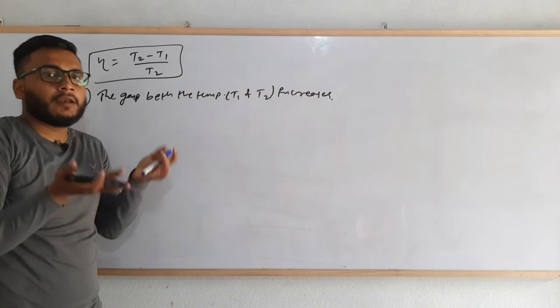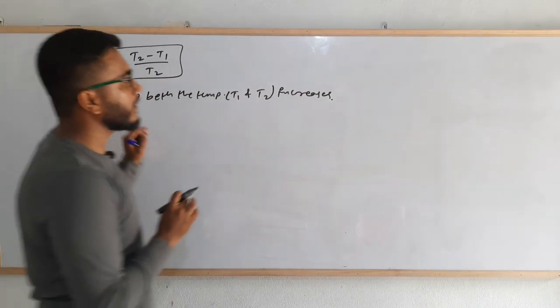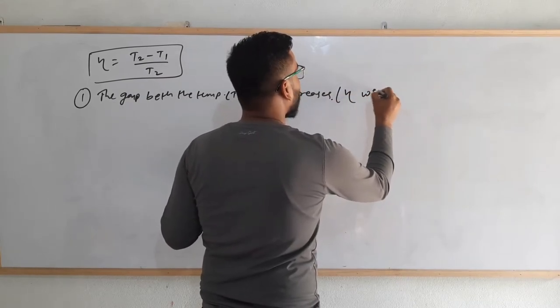That is, T2 is getting bigger and bigger and T1 is getting smaller and smaller. Then what will happen? In this case, the efficiency will increase.